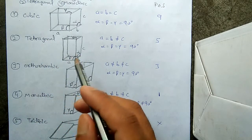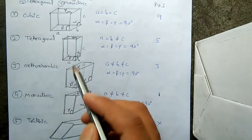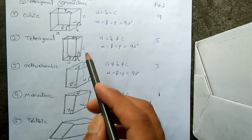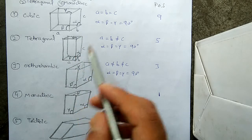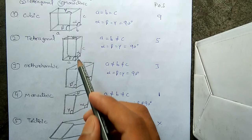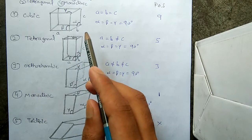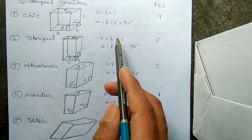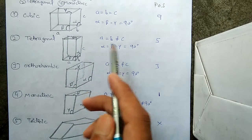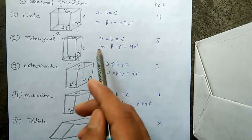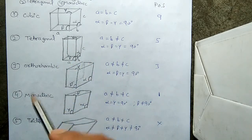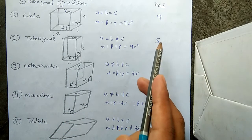The second one is the Tetragonal system. Tetragonal is just like a cubic, but one side is extended — one side is greater. So a equals b, meaning these two sides are equal, but the third one c is greater. All the angles alpha, beta, and gamma are equal to 90 degrees, and this system has five planes of symmetry.